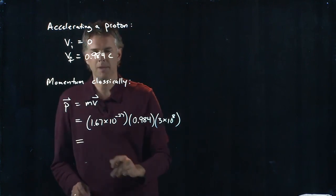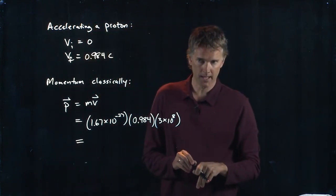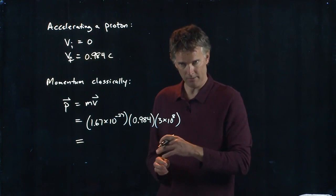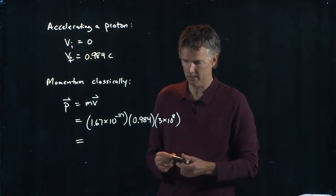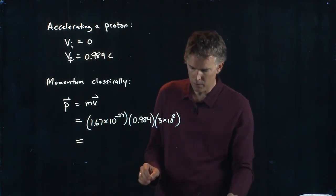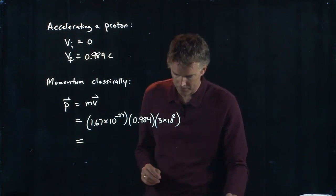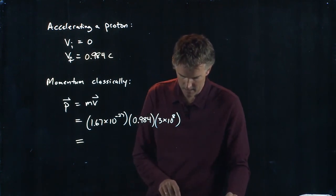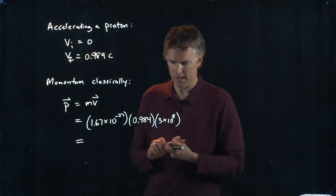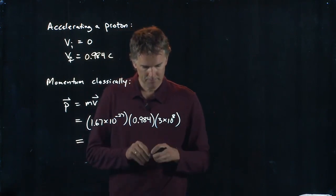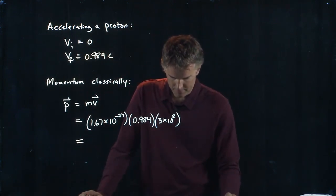That's going to be a number that is significantly less than the one that we just calculated. Right? And you know exactly how much less. If I just take away the gamma and do that calculation, what do I get?